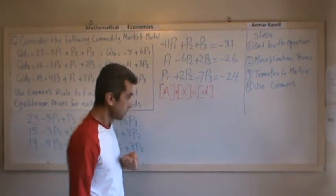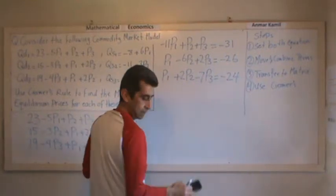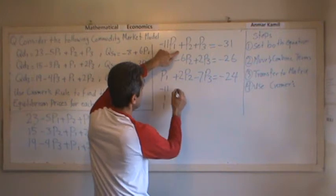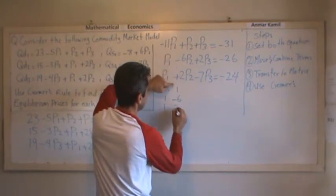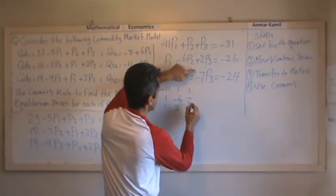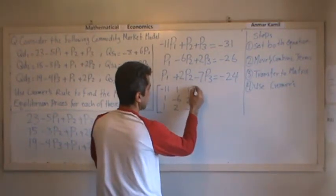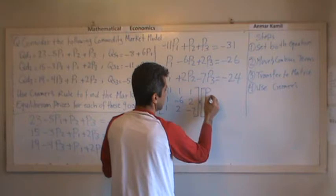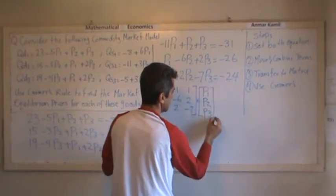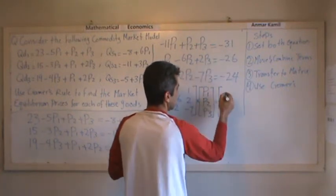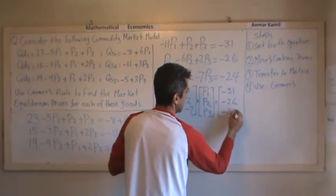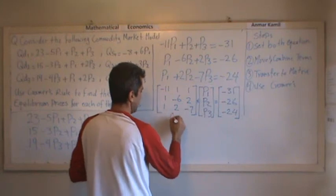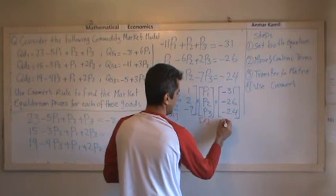Matrix A is: negative 11, 1, 1 in the first row; 1, negative 6, 2 in the second row; 1, 2, negative 7 in the third row. Multiplied by matrix X, which contains the variables P1, P2, and P3, equals the constant matrix D with values negative 31, negative 26, negative 24.